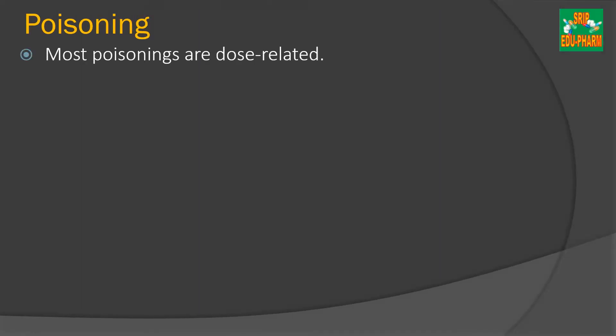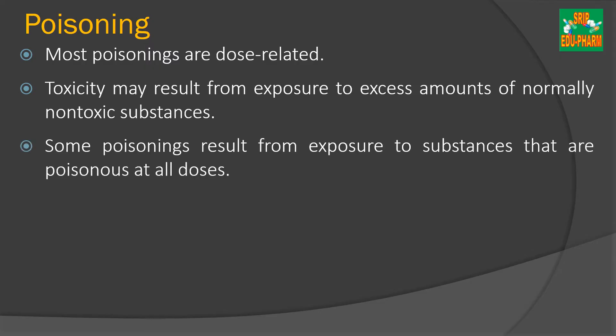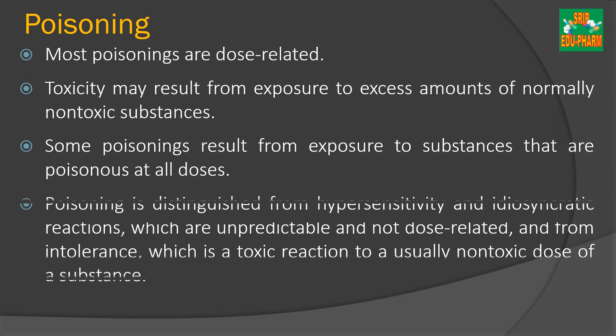Most poisonings are dose dependent — that is, the higher the dose, the higher the toxicity. Toxicity may also result from exposure to excess amounts of non-toxic substances, and some poisoning results from exposure to substances that are poisonous at all doses. Poisoning is different from hypersensitivity and idiosyncratic reactions, as those are unpredictable and not dose related. It also differs from intolerance, which is a toxic reaction to a usually non-toxic dose.